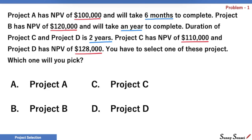We will look only into the NPV. Which project has the highest NPV? NPV for project A is $100K, it is $120K for project B, $110K for project C, and $128K for project D. Project D has the highest NPV. So, our choice is D, Project D. Did you get that right?